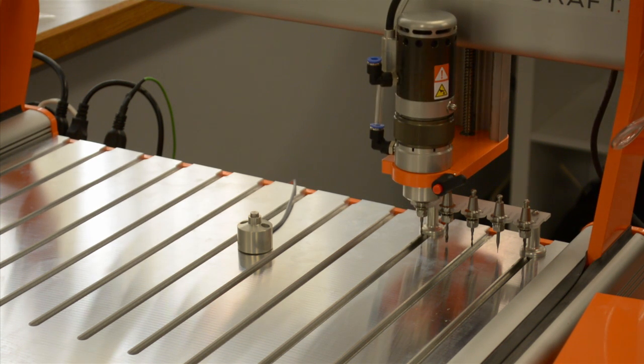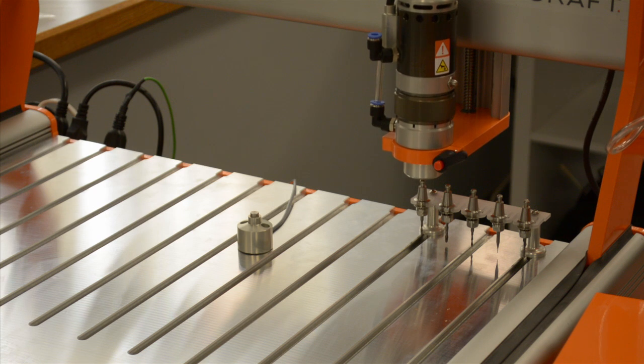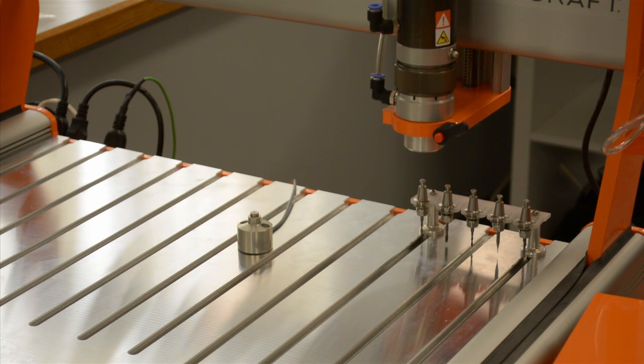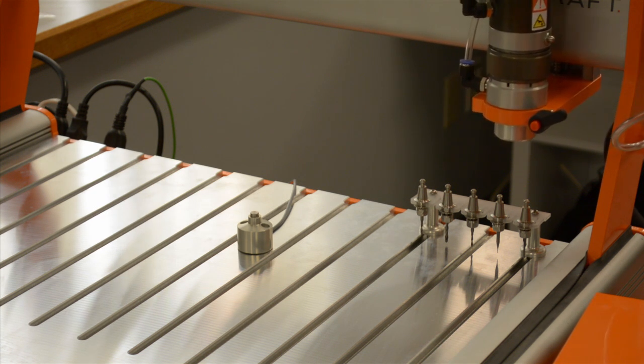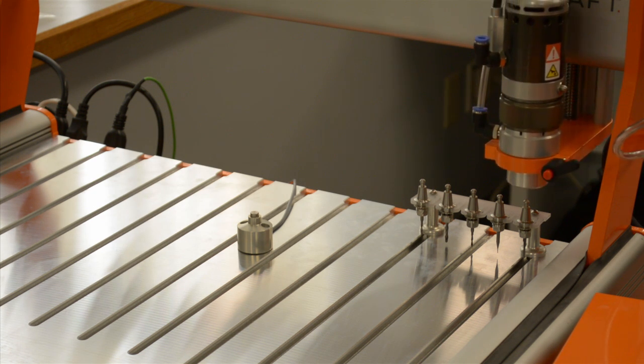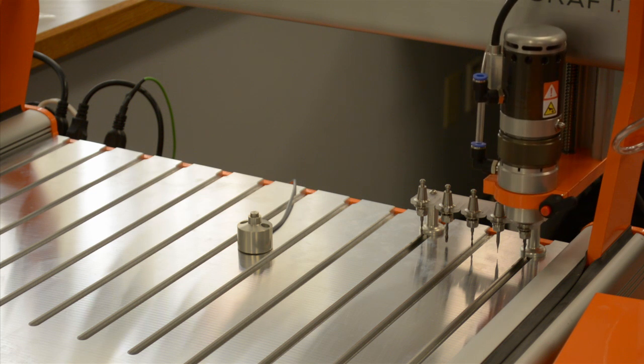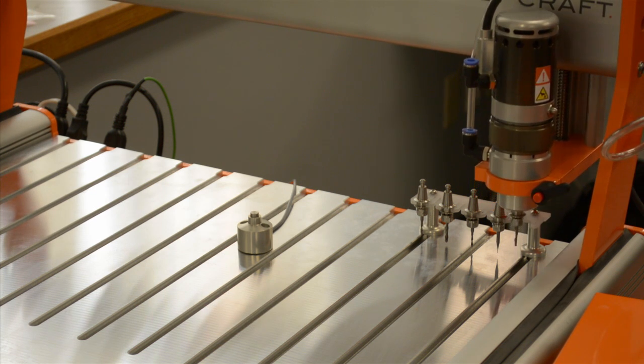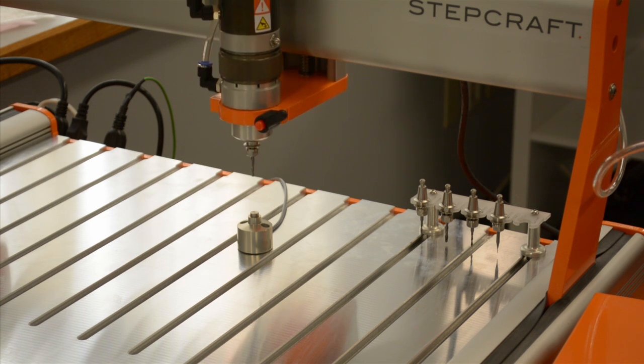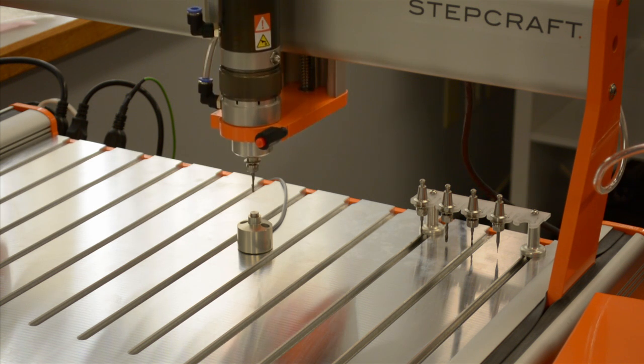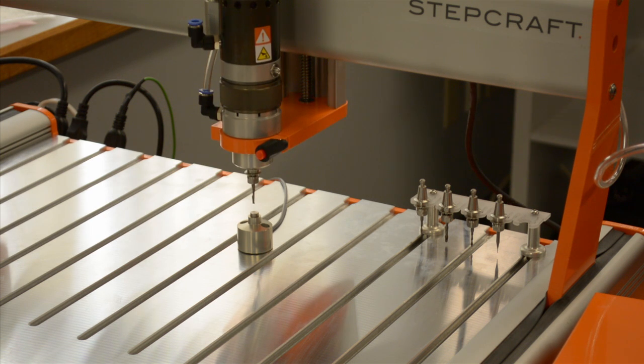Alright. Now, we want to position tool number 1 about a quarter inch above the top of the tool length sensor. We don't actually want to touch the tool length sensor. So that's in position.